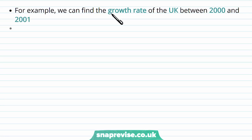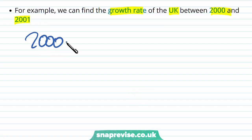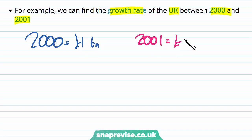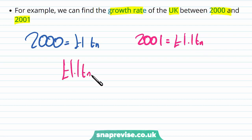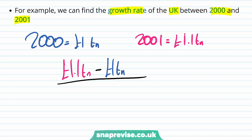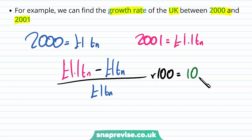For example, we can find the growth rate of the UK between 2000 and 2001. Let's say GDP in 2000 is 1 trillion and GDP in 2001 is 1.1 trillion. The percentage change is: 1.1 trillion minus 1 trillion, divided by 1 trillion, times by 100 — equal to 10%. That is our growth rate from 2000 to 2001.